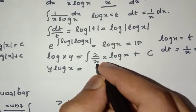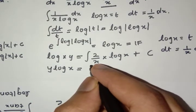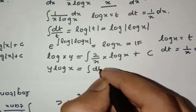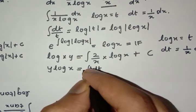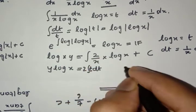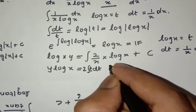So we'll substitute it here, so we get integral 2t dt, and we'll take this 2 outside, plus C.